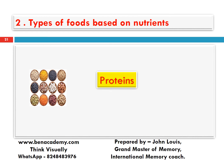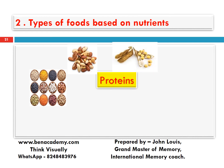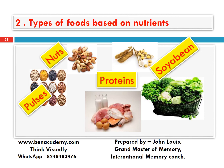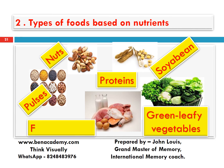Proteins — what are we looking for? Pulses, nuts, soya bean, green leafy vegetables, and the last ones — fish, egg, and milk. What is the first one? Pulses. Second? Nuts. Third? Soya bean. Next? Green leafy vegetables. Last items? Fish, egg, and milk.